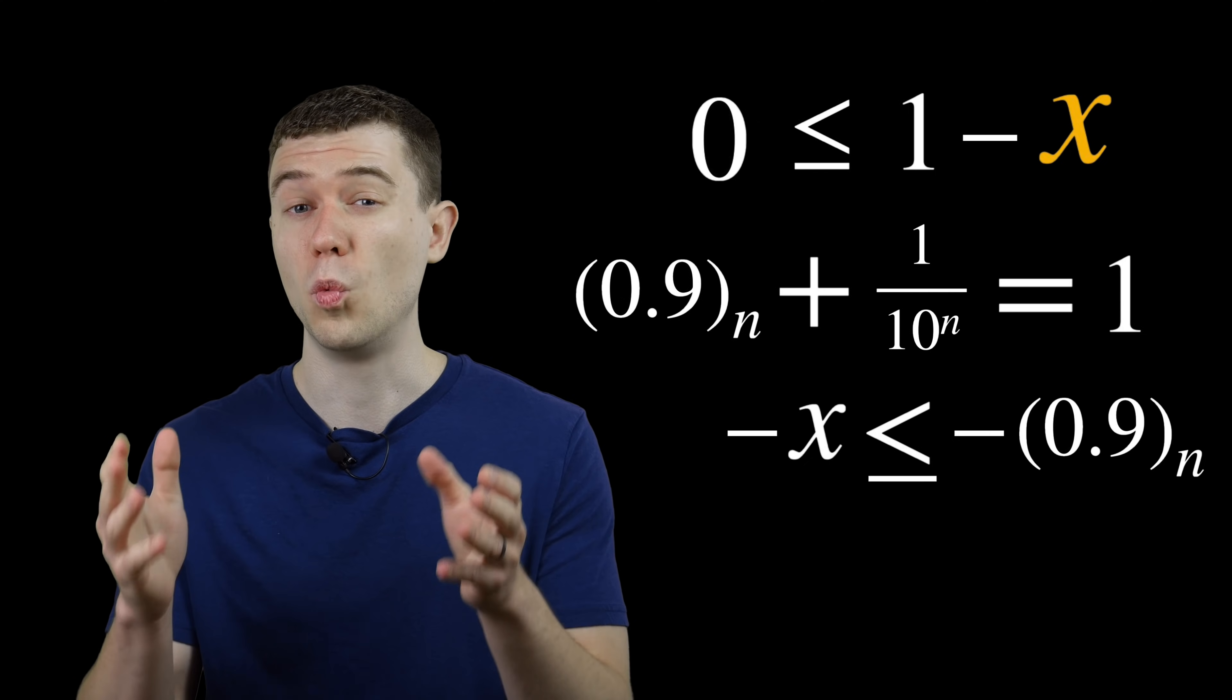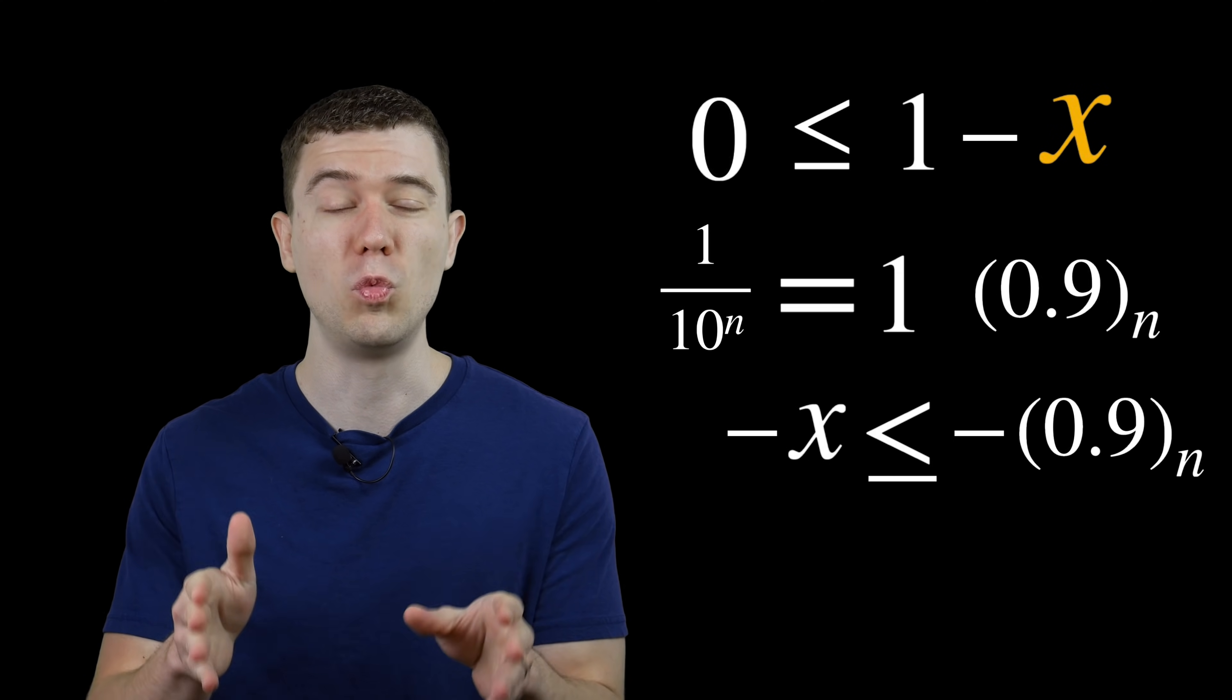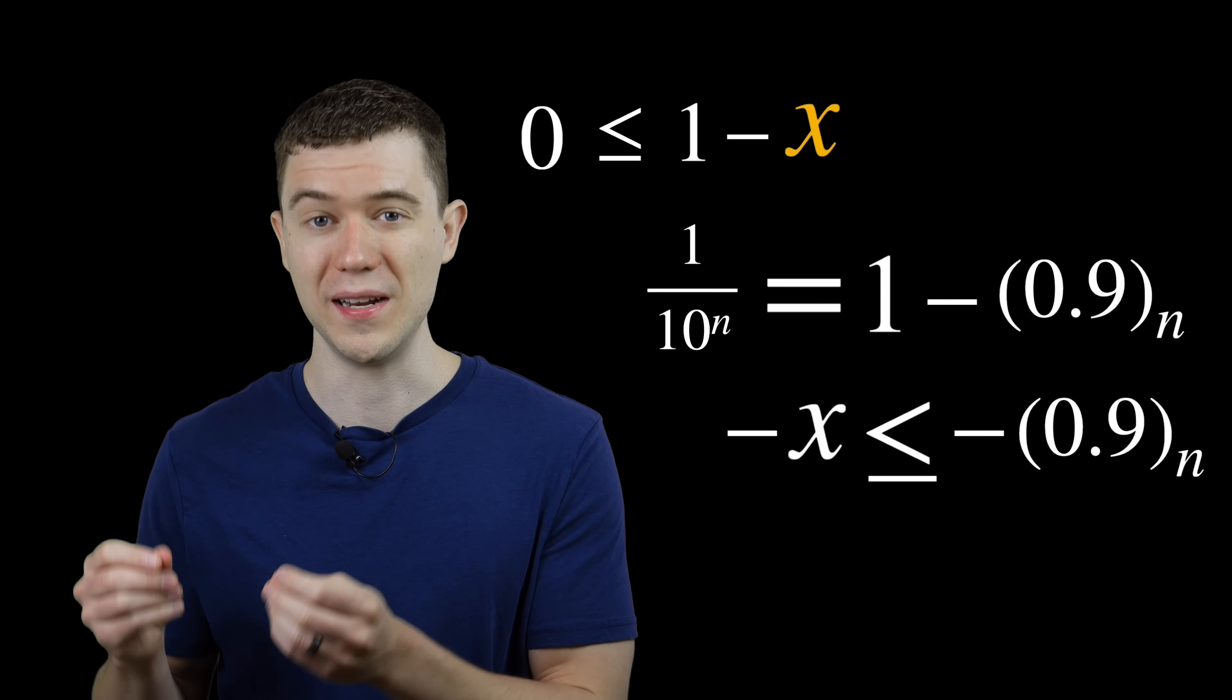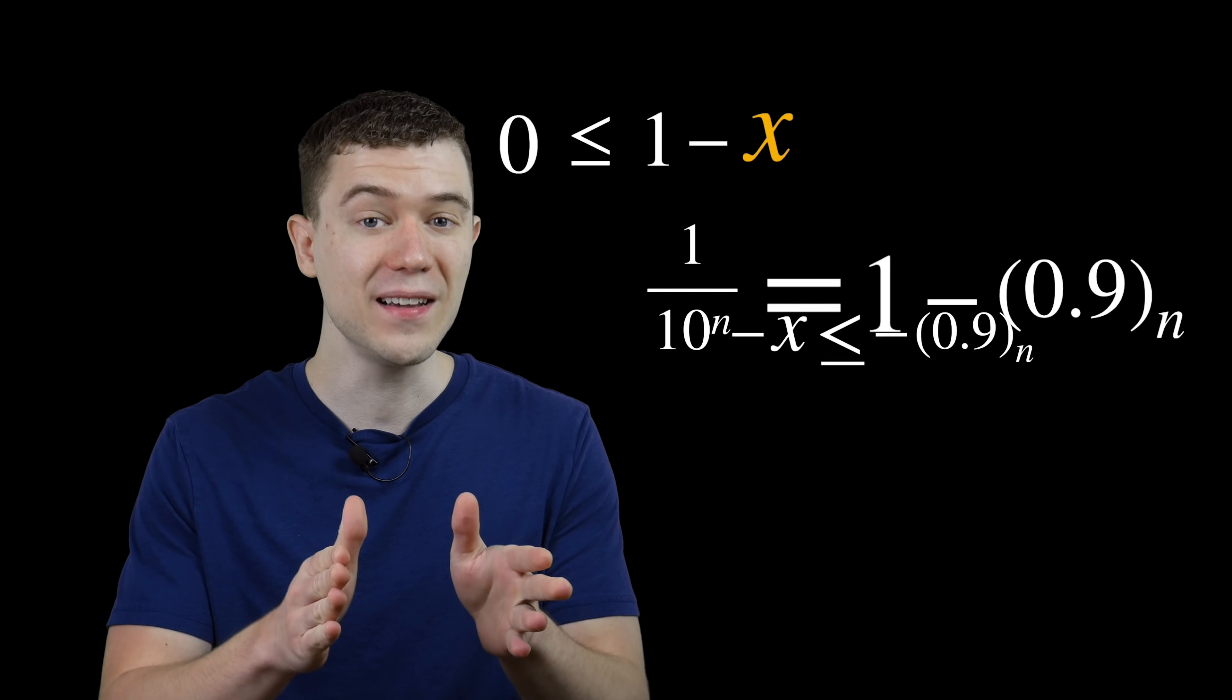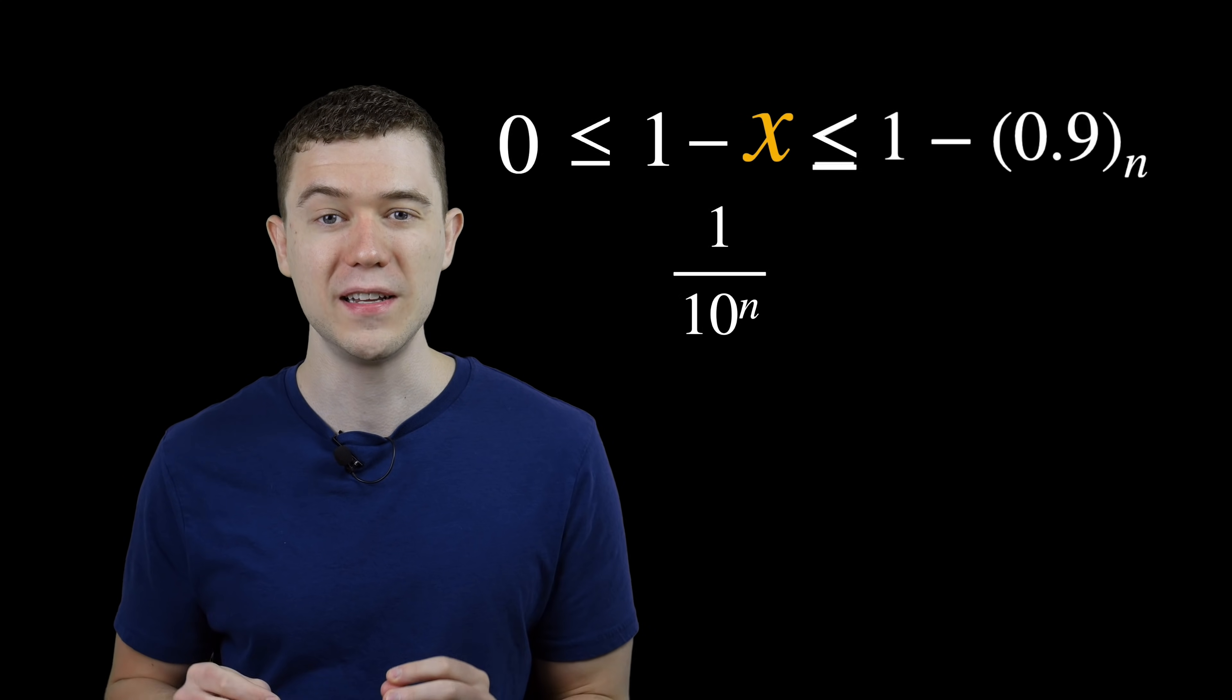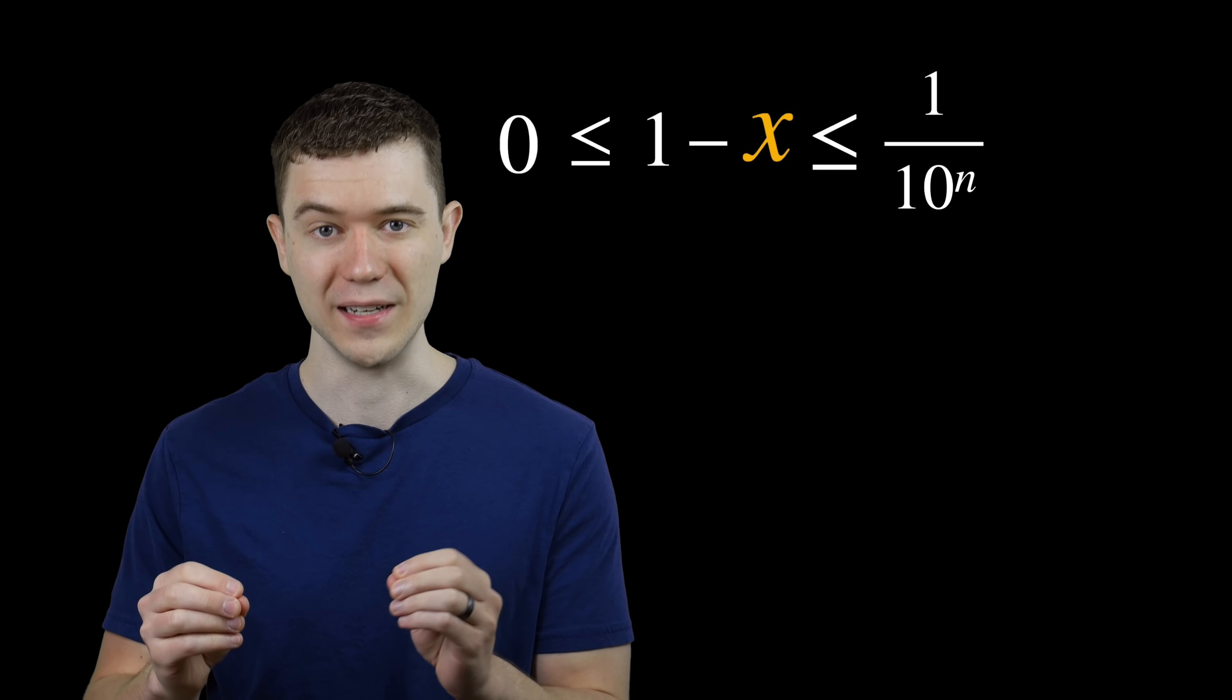And from our equation, 1 over 10 to the n equals 1 minus 0.9 sub n. Let's string these three ideas together. 0 is less than or equal to 1 minus x, but 1 minus x is less than or equal to negative 0.9 sub n, and 1 minus 0.9 sub n equals 1 over 10 to the n.